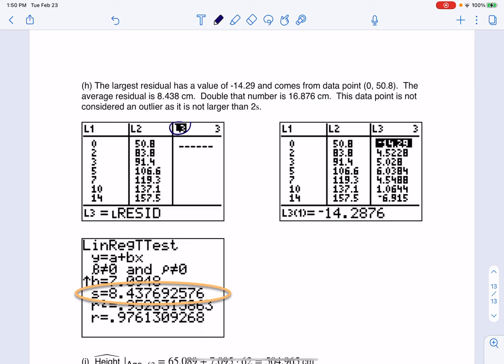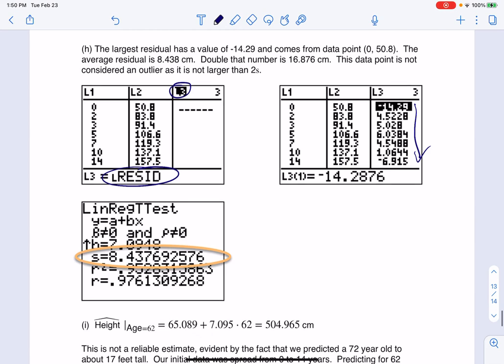But once you've done that, what you need to do next is you need to go to L3 and define it to be your residuals. And as long as you have something in your Y1, this will auto-populate. And then the fun really kicks in. Then what you get to do is you have to go to this new part of your calculator and you have to run linear regression t-test and look for this S value. This number here, this is your average residual length.